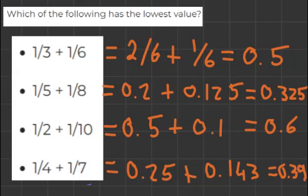And now we can just compare our four decimals and we see very clearly that one of them is smaller than the rest. And that is 0.325. And if we look at our answers, that is the same as the one we got at the beginning, which was 1 over 5 plus 1 over 8.